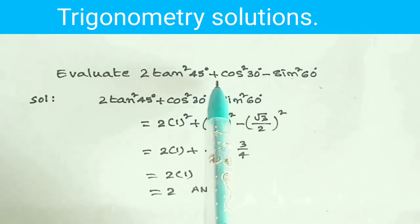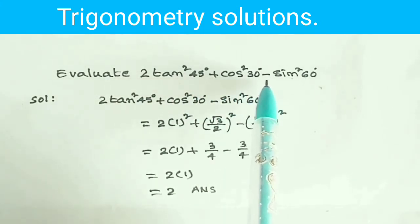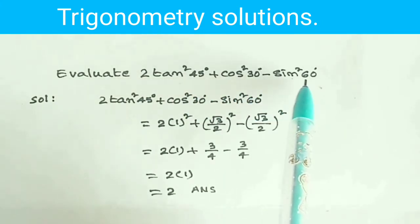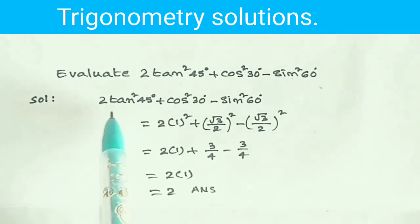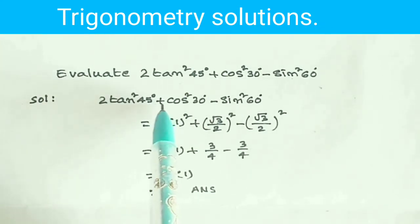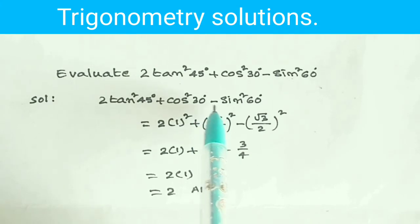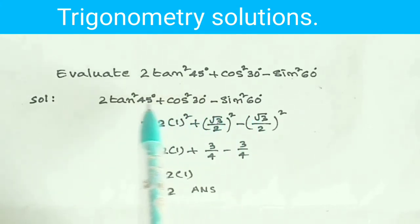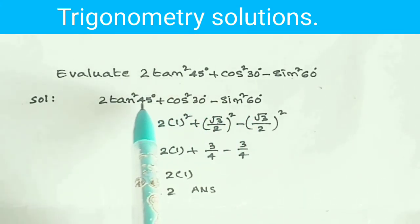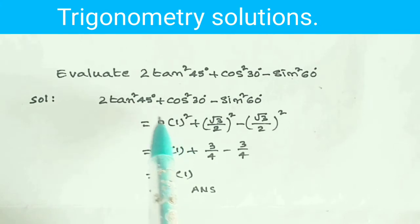Evaluate 2 tan squared 45 degrees plus cos squared 30 degrees minus sin squared 60 degrees. tan 45 degrees is equal to 1.